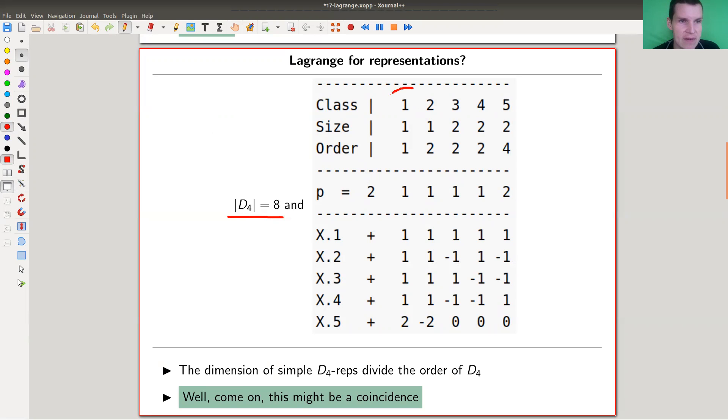And you will observe, remember that in this column you'll see the dimensions of the simple representations here. So one, one, one, one, two, and indeed, all of them divide eight. The only slight catch here is that you might complain that this example is a little bit too small.